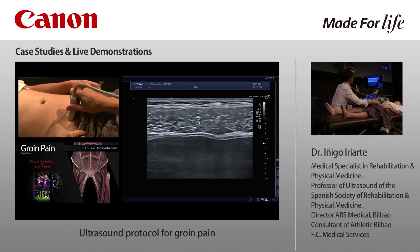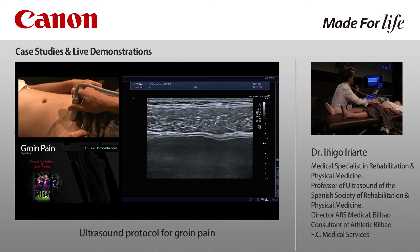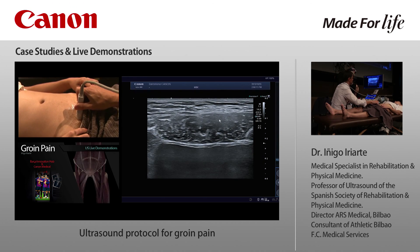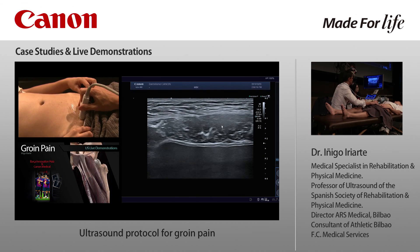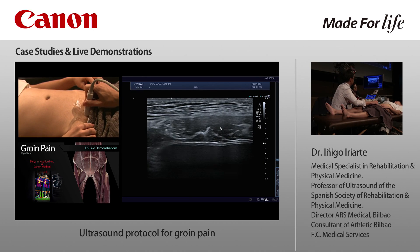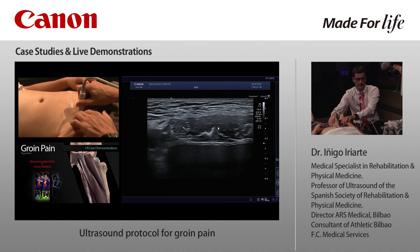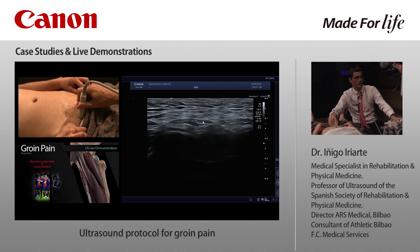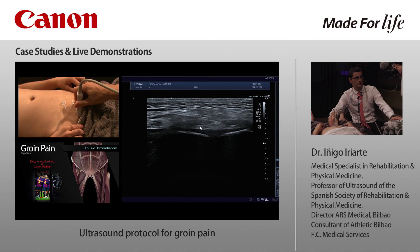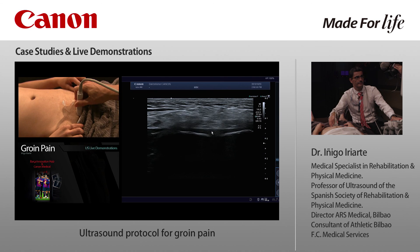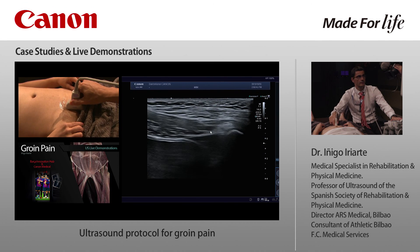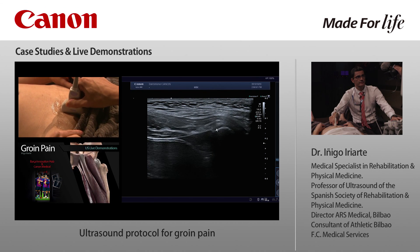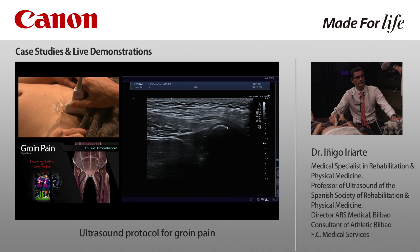These two muscles are the rectus abdominis — this is the left one and this is the right one. As we go distal, we notice a small muscle appearing here — these are the pyramidalis, left and right. Going distal, the pubic bone appears, and this is the insertion of the rectus abdominis in the superior side of the pubis — this is the superior ligament. If we turn the probe 90 degrees, this is the rectus abdominis, this is the pyramidalis muscle, and the insertion of the rectus abdominis in the superior area of the pubic bone.